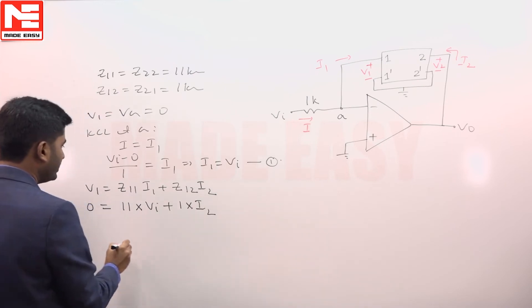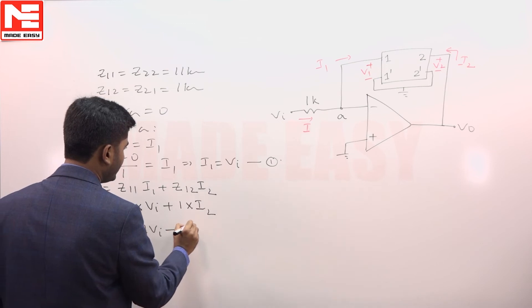And if you rearrange you will get i2 equal to minus 11 V i. Take it as equation number 2.